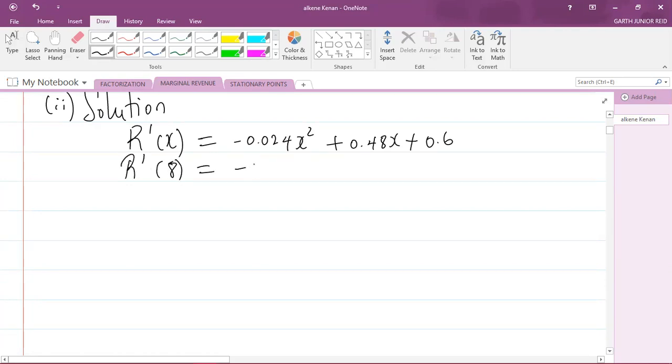So when x is 8, we get negative 0.024 times 8 squared, plus 0.48 multiplied by 8 plus 0.6.